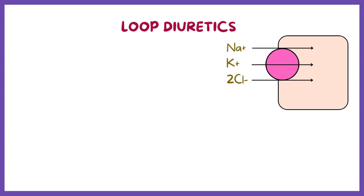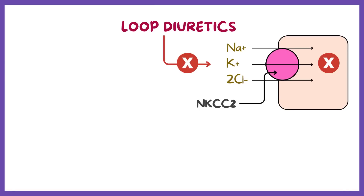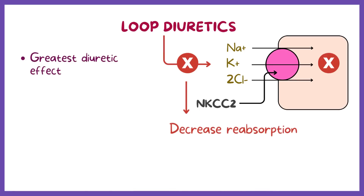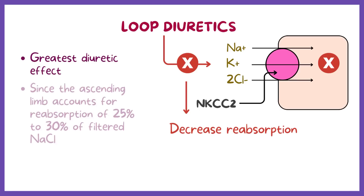Loop diuretics inhibit the cotransport of sodium, potassium, and chloride — known as NKCC2 — in the luminal membrane in the ascending limb of the loop of Henle. Therefore, reabsorption of these ions is decreased. These agents have the greatest diuretic effect of all diuretic drugs, since the ascending limb accounts for reabsorption of 25% to 30% of filtered sodium chloride.